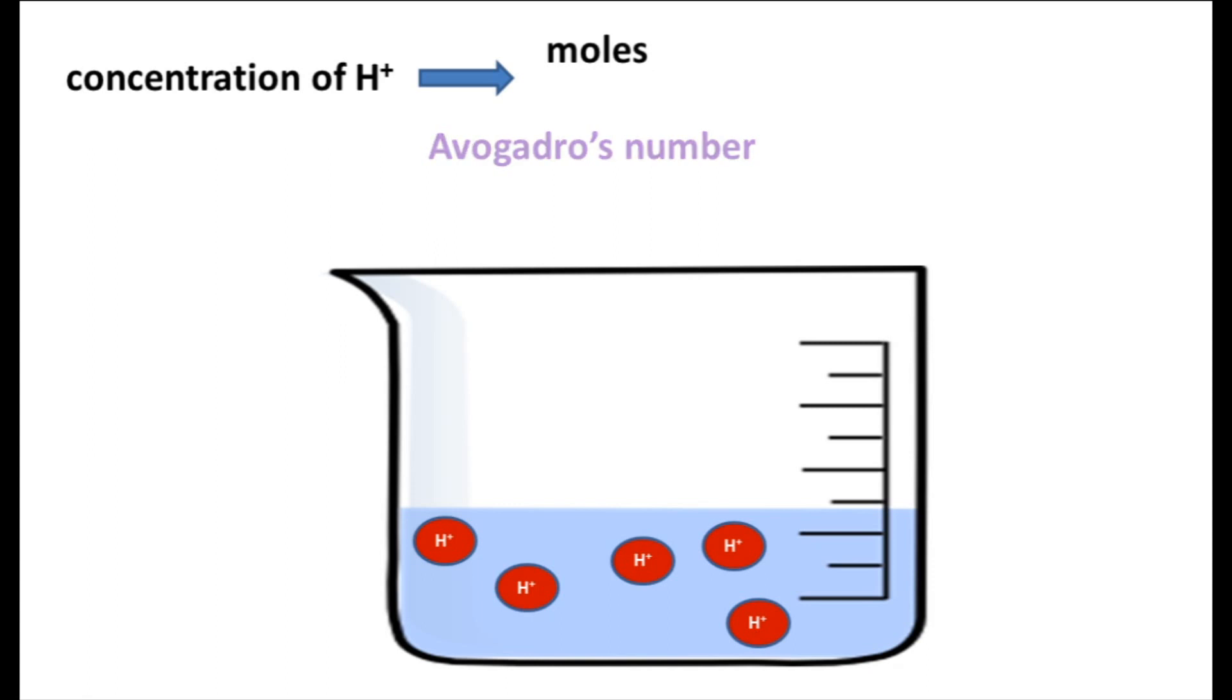So we count the ions, and then we have to know how much solution do we have. And we break this down into units of one liter. So we have moles per liter, and this can be abbreviated as shown. When we have anything measured in moles per liter, that is called molarity. So anytime we say molarity, that means we're dealing with moles per liter. We can abbreviate this with a capital M.